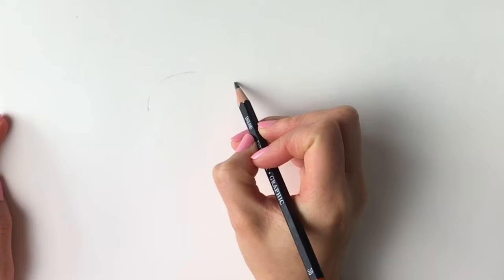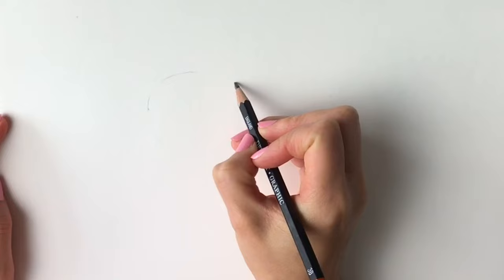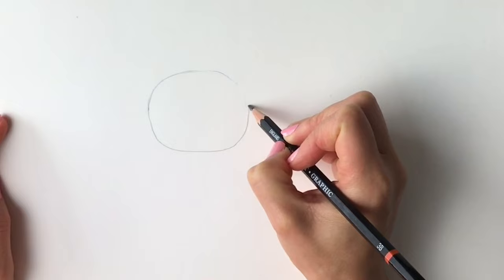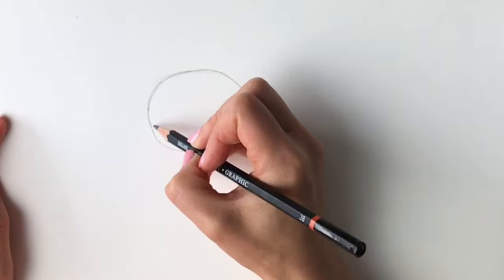To start off with, lightly in pencil we're going to be doing an oval shape, so just very roughly draw an oval shape a little bit like this. Don't worry, it doesn't have to be perfect. It might help to use lots of wispy lines just to get the shape right, but this is just a shape that we're going to rub out in the end anyway.